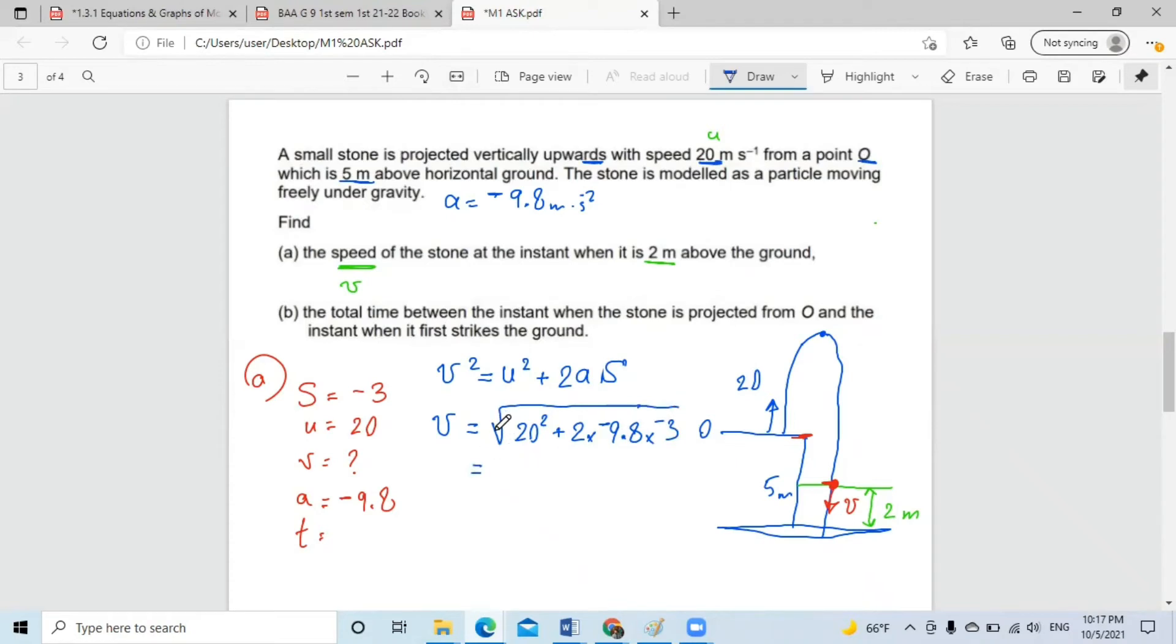And by using the calculator, the answer is 21.4 meters per second. This is the answer for part A.